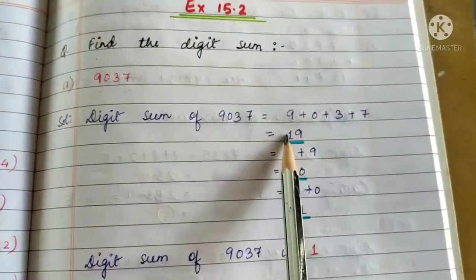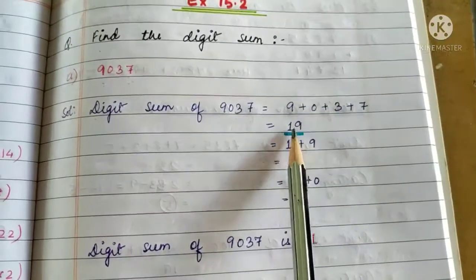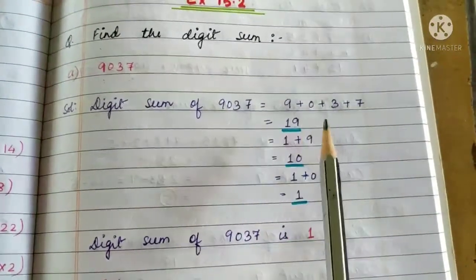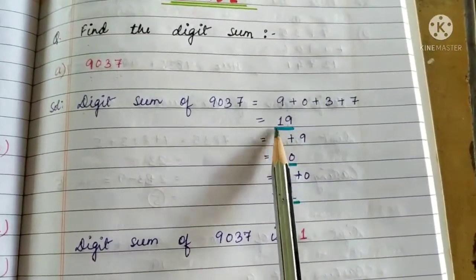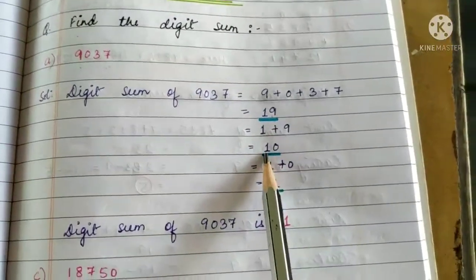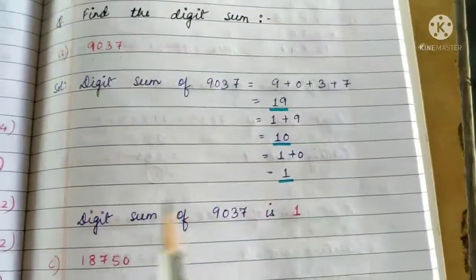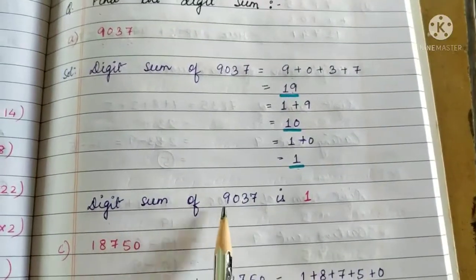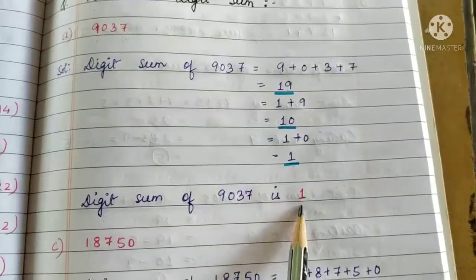So the digit sum of 9037 equals 9 + 0 + 3 + 7, that is 19. Again, we keep on adding till we obtain the sum in a single digit: 1 + 9 = 10. Now 10 is 1 + 0 = 1. So the digit sum of 9037 is 1.